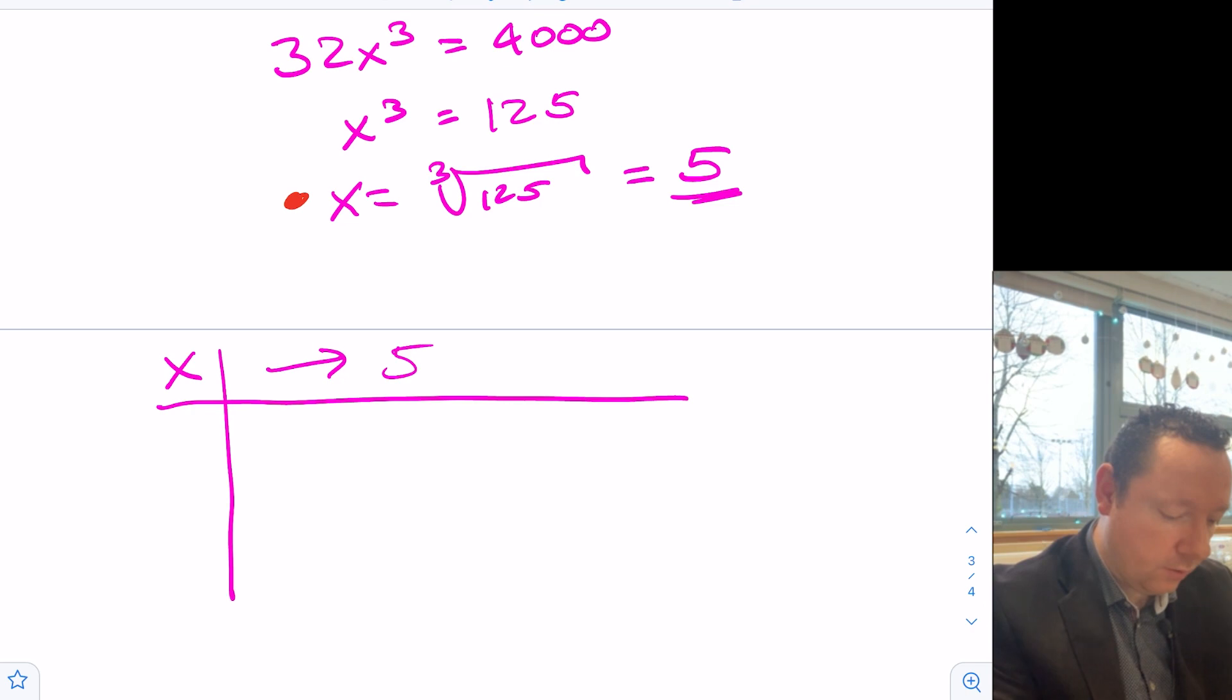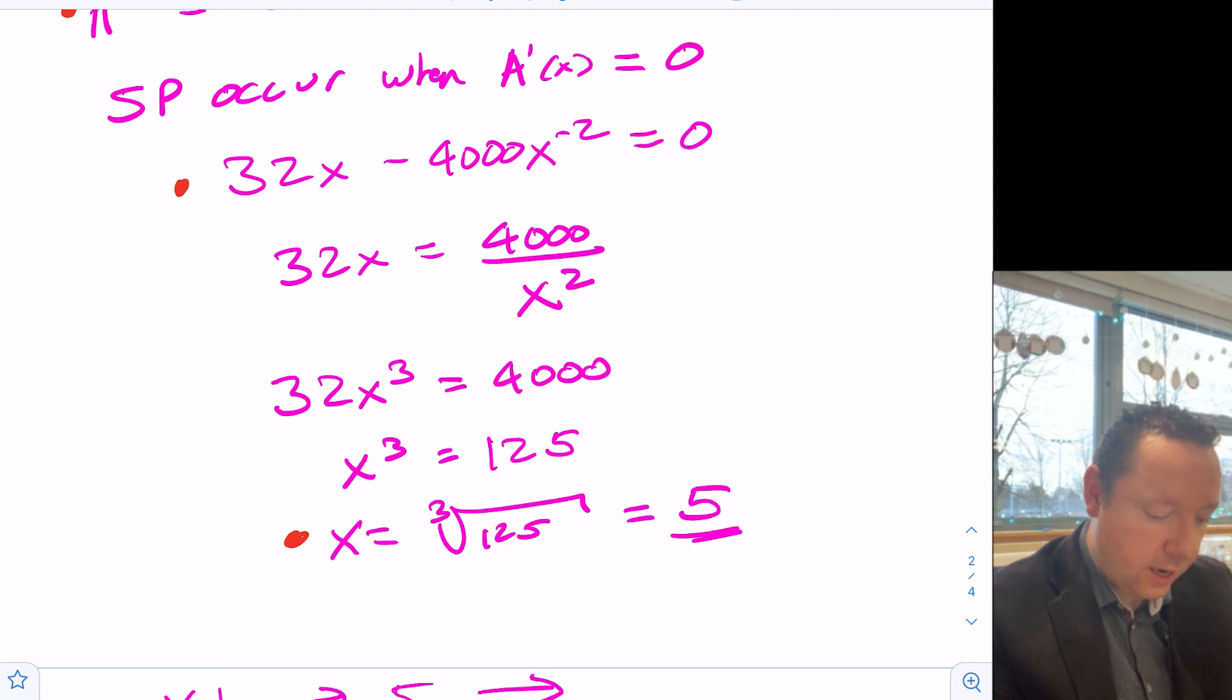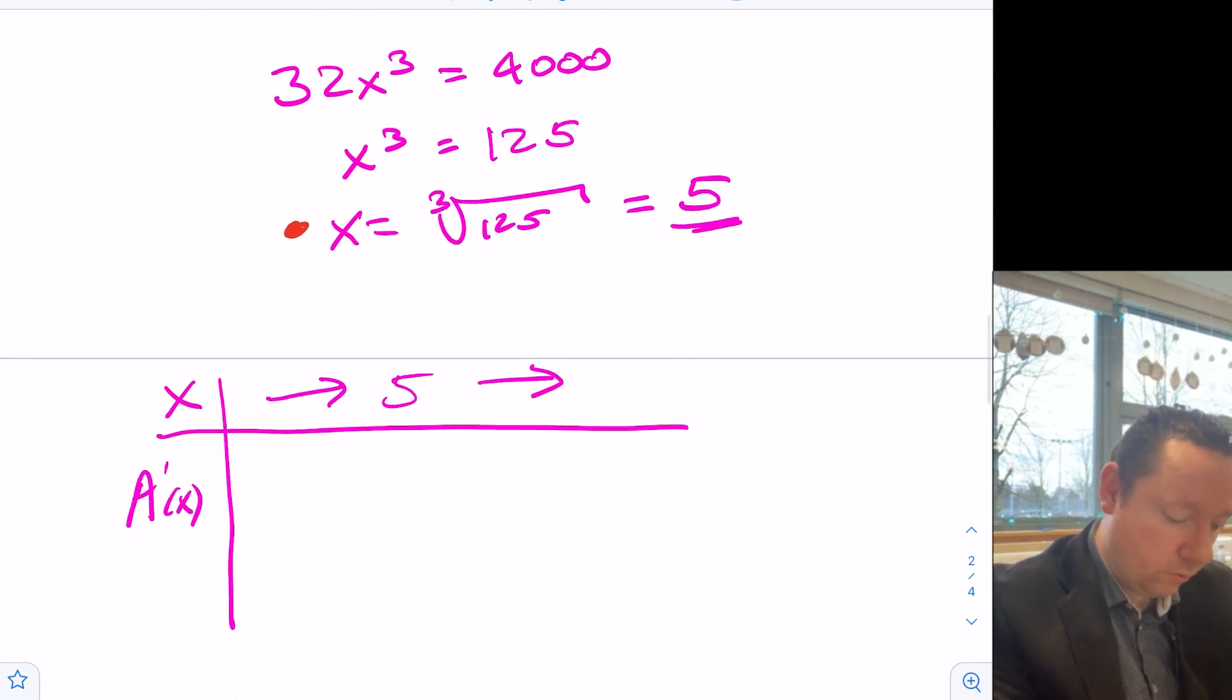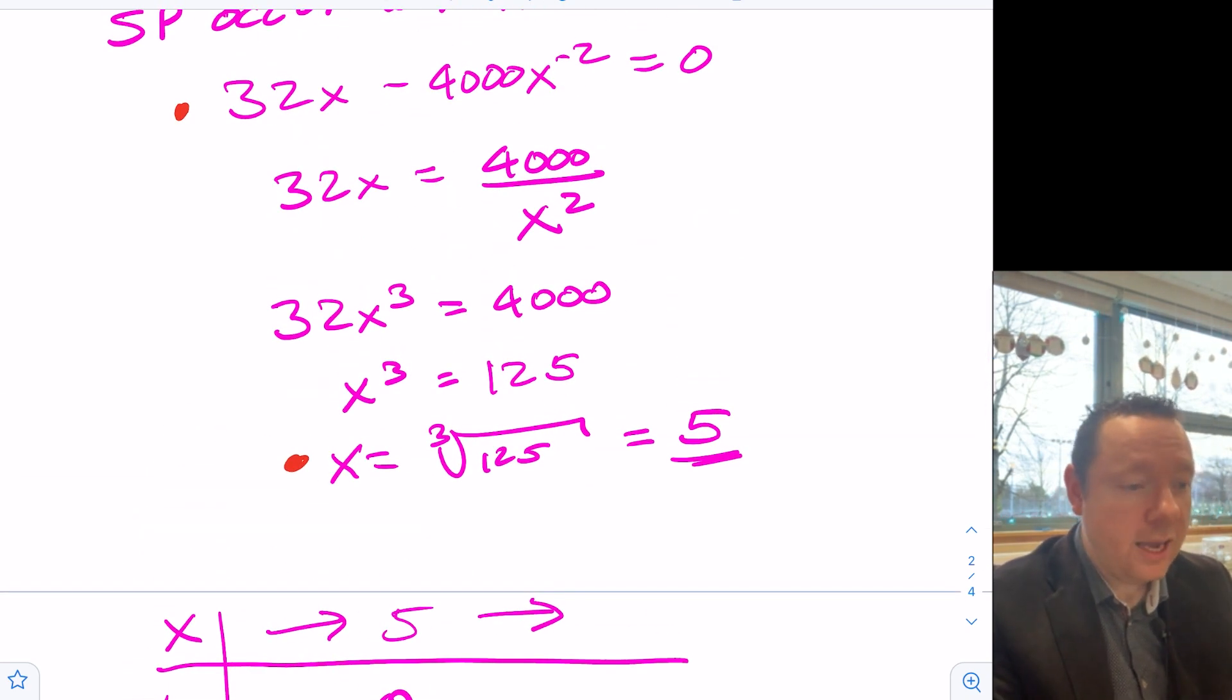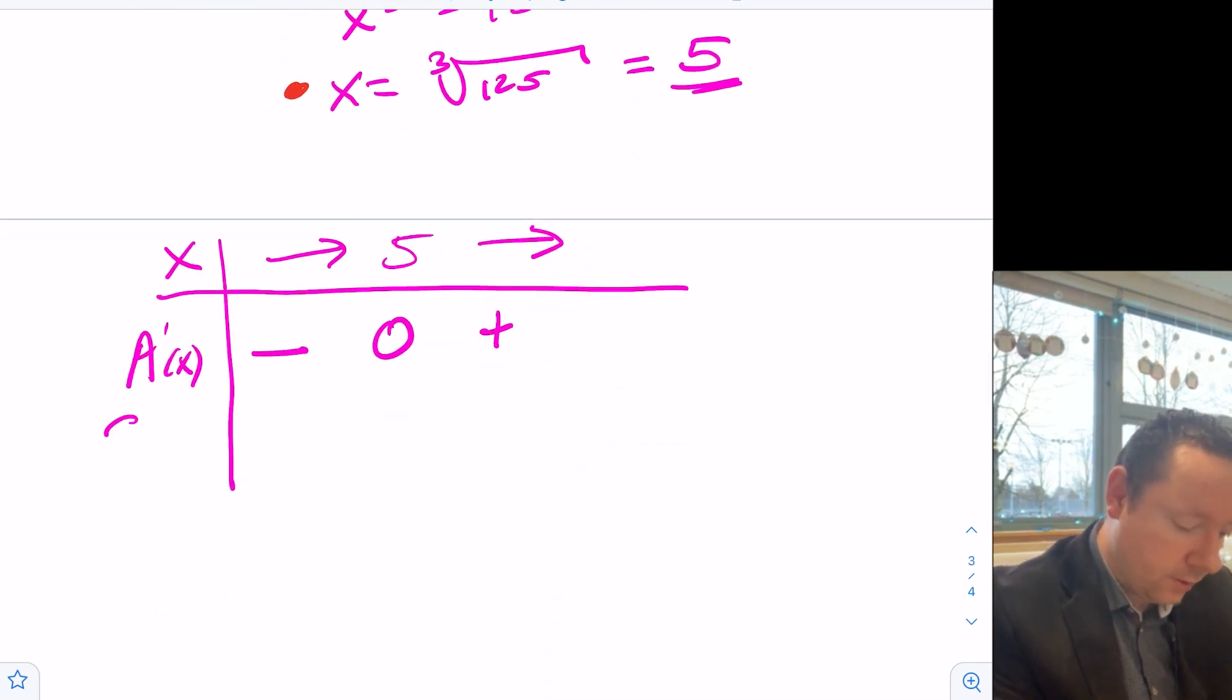So we need to do a table of signs. So let's do our table of signs just to show that. X going along. 5. And we're going along. A dash x. So a number less than 5 but not 0, because 0 is undefined. Then if you picked 1, say, you would get 32 minus 4,000 over 1. That's a negative. So we've got negative 0. So I'm hoping that after 5 is positive. But you can check. Just get yourself a calculator. Pick a number close to 5, like 6, say. 32 times 6 is 192. 4,000 divided by 36 is 11. That minus 11 is positive. So our shape is down along and up. Therefore, x equals 5 minimizes A.